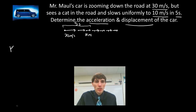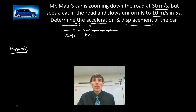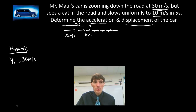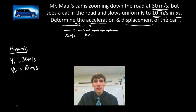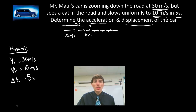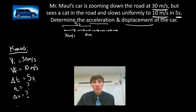Now I need to do the K step and write out my knowns. Zooming at 30 meters per second means initial velocity equals 30 meters per second. It slows uniformly to 10 meters per second, so final velocity equals 10 meters per second. This 5 seconds represents the change in time, so delta T equals 5 seconds. The question asks for acceleration — question mark — and displacement, delta X — question mark. When solving for multiple unknowns, we may need multiple steps and multiple equations.